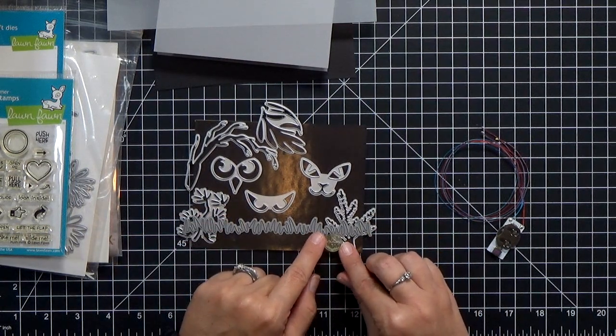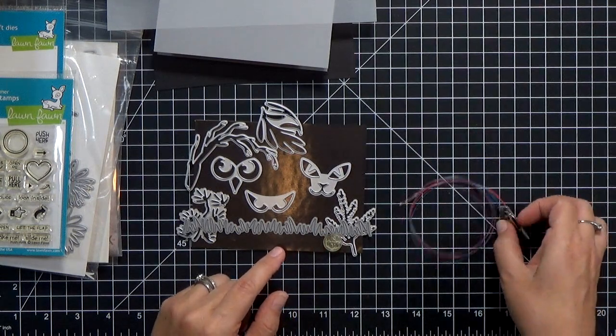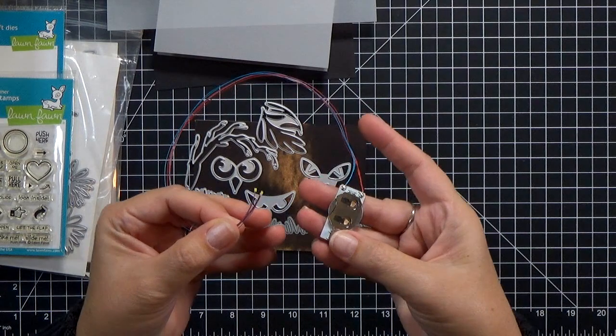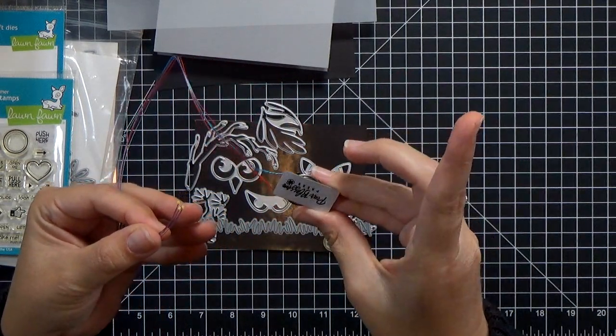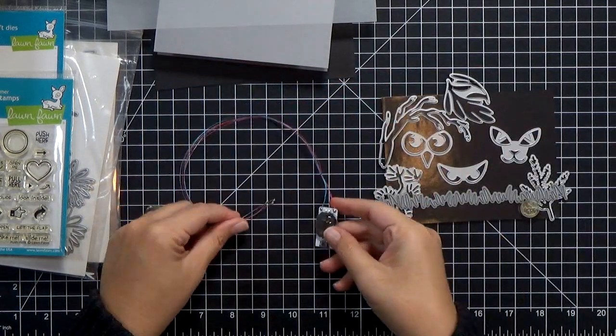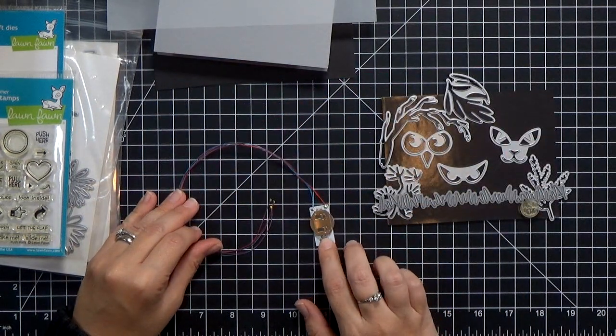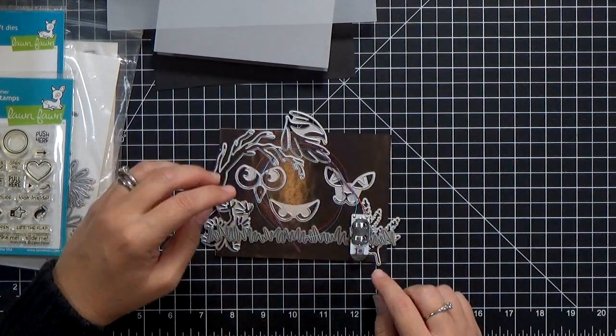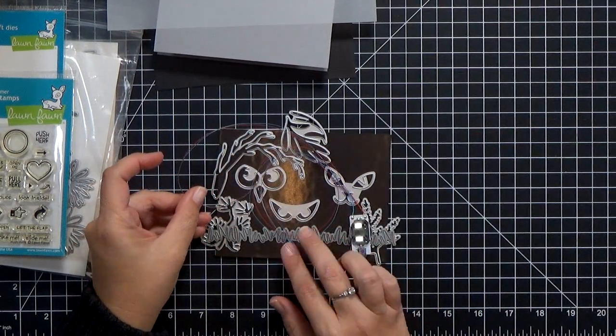Now, remember I said this is a quick and easy card? It's easy, but it does have three lights. So what we're going to use is the Easy Light. This is actually a brand new product my husband and I made. And it's got three lights hardwired onto a little battery pack with a switch there. And it's very simple to use. You just tape the lights down where you want them, and then tape the battery pack down.